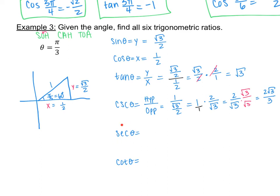For secant — the reciprocal of cosine — it's hypotenuse over adjacent: 1 over 1 half. Dividing, I keep 1 and flip 1 half to 2 over 1. Multiplying gives 2. So secant of pi over 3 equals 2.